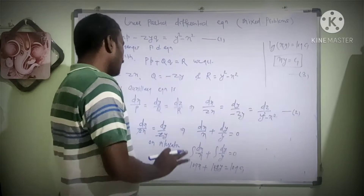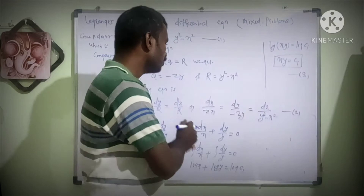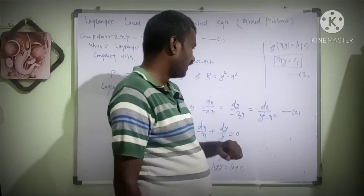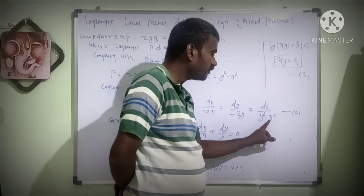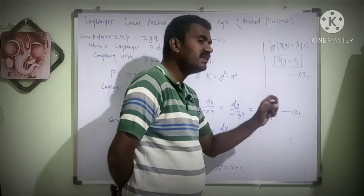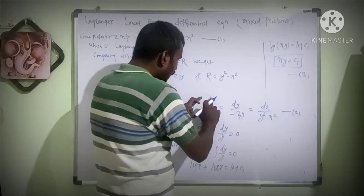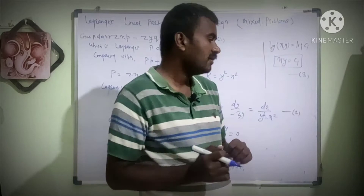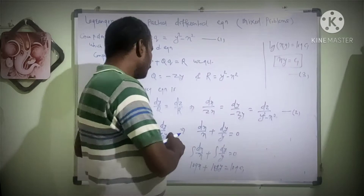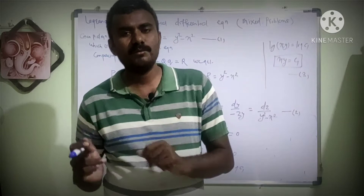Now we try the second group — considering y and z. Here y is present but there is an extra x term which cannot be cancelled, so three variables are present instead of two — this group is not possible. For the first and third group — considering x and z — there is a y square term in addition which cannot be cancelled, so this group is also not possible. From the three groupings, only one group gave us one solution by using the method of grouping.